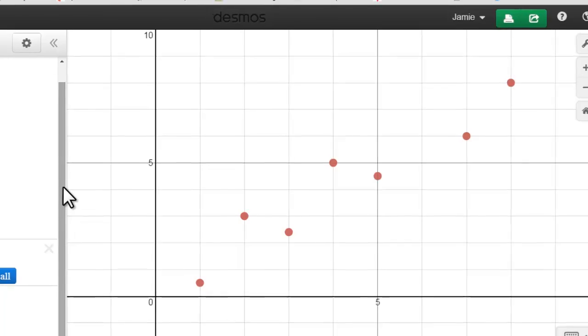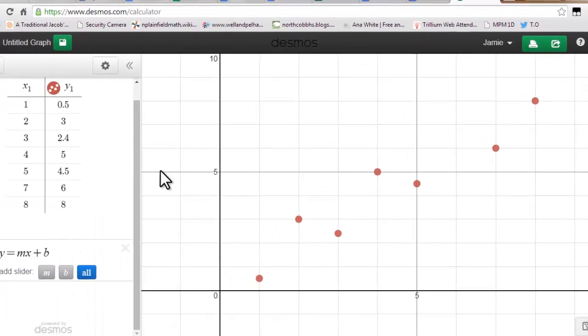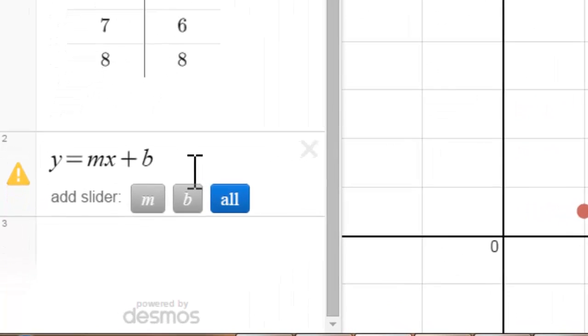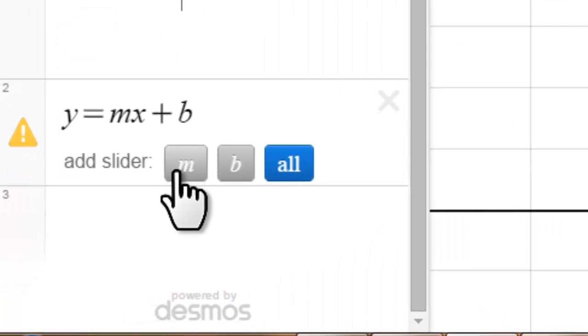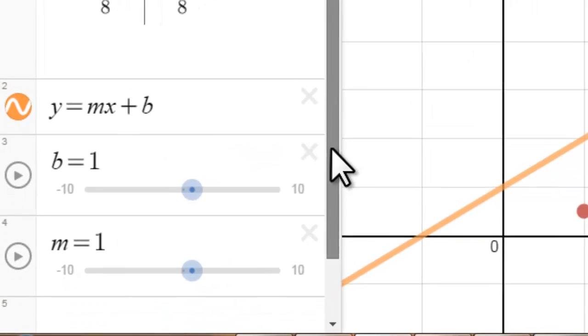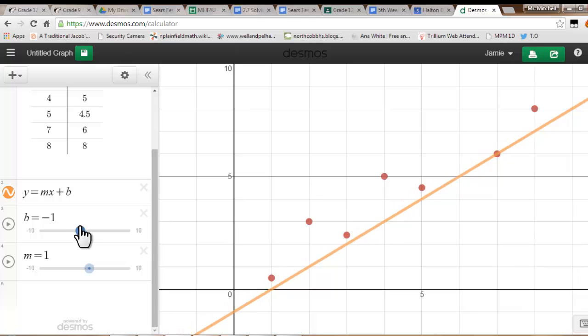What you've done in the past with scatterplots is try and create lines or curves of best fits. Here's an equation for a straight line, y equals mx plus b. Desmos is great because it lets you add sliders to your equations, which then lets us play around with our values for the y-intercept and values for the slope, and we can try and approximate a line of best fit.